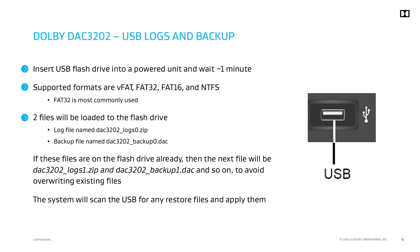After about a minute, two files will be loaded onto the drive. If the drive has an activity light, watch it for confirmation that the process is complete. The log file will be named DAC-3202-logs0.zip. The backup file will be named DAC-3202-backup0.dac. If these files are on the flash drive already, the next available sequential number will be appended to the file name to avoid overriding existing backups and logs.